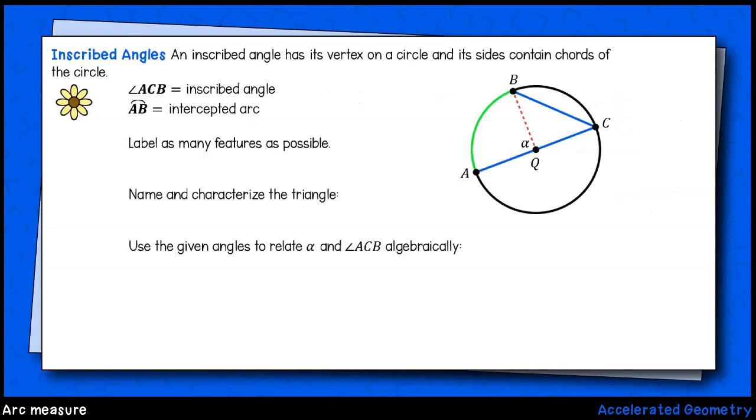What about inscribed angles? Well, let's see if we can discover the measure of an arc intercepted by an inscribed angle. Let's start by analyzing the figure that's given. We have an angle ACB, which is an inscribed angle. We also have, labeled in green, an intercepted arc AB.